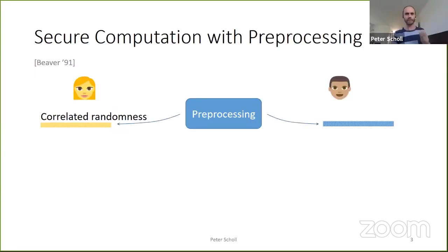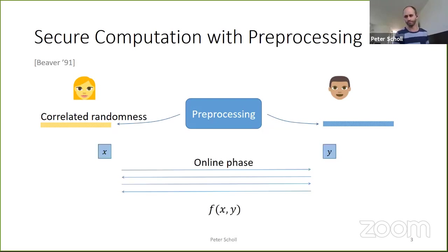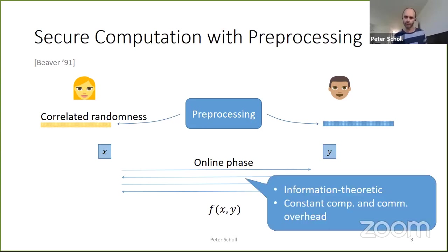The motivation is secure computation in the preprocessing model, going back to Beaver from 1991, where a trusted dealer distributes some correlated randomness to the parties. The two parties have long random strings which are correlated. In the online phase, parties use this correlated randomness together with their inputs to compute the function. The advantage is that the online phase can be very efficient — information theoretic, requiring no cryptographic primitives, with constant computational and communication overhead over computing and sending the circuit in the clear.